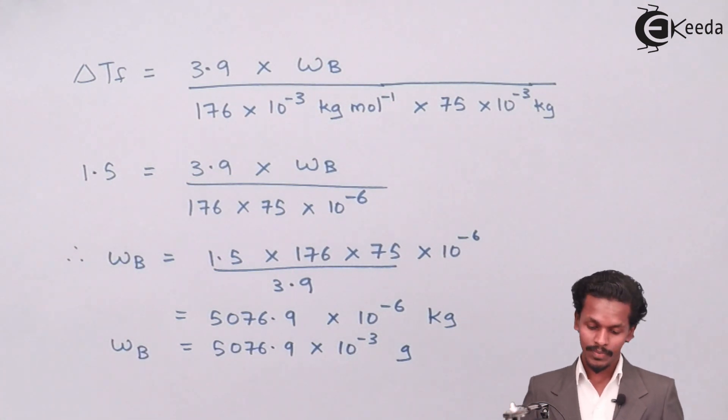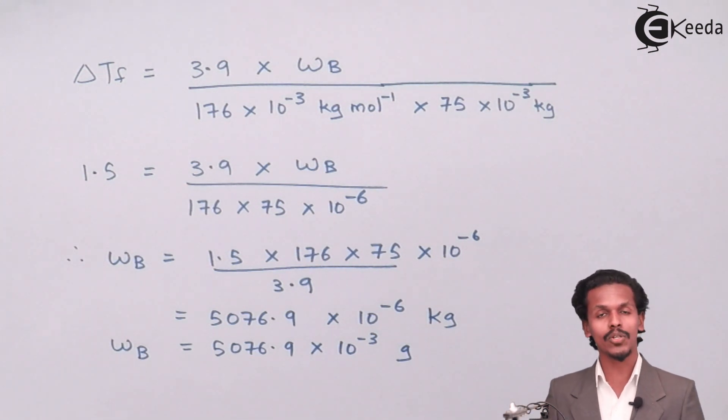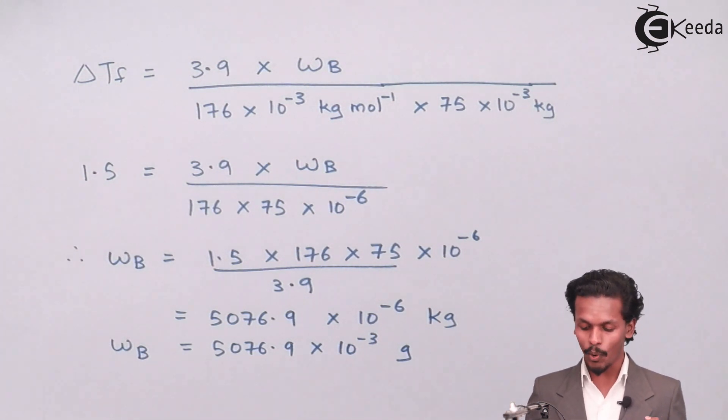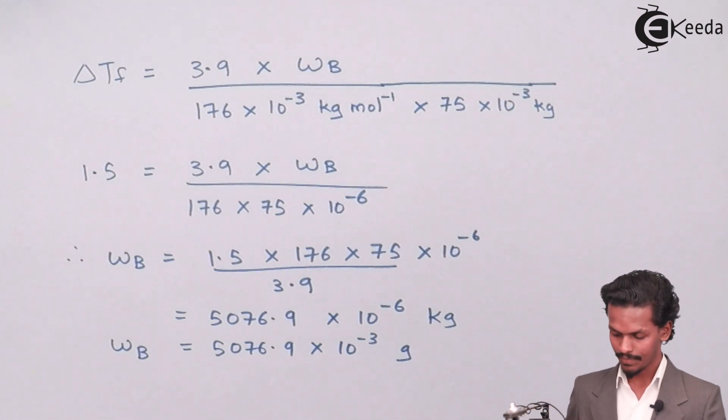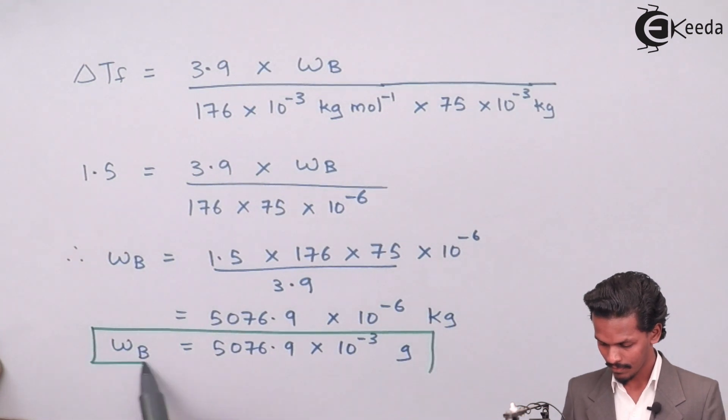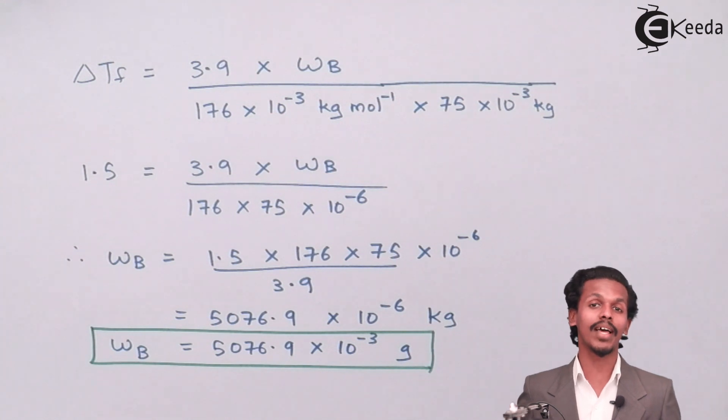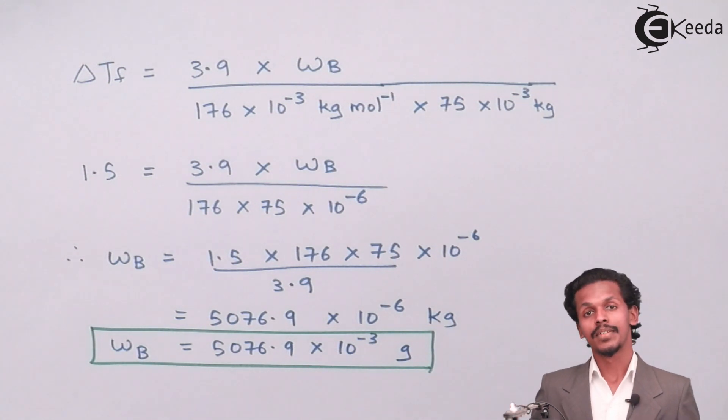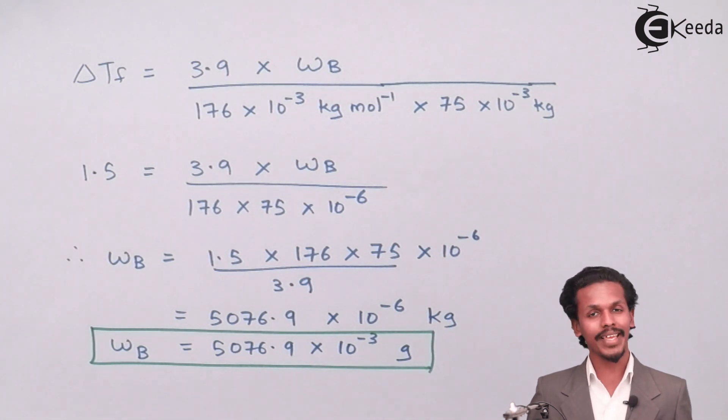Eventually we get the answer as WB equals 5076.9 into 10 raised to minus 3 gram. This is how we have calculated the mass of ascorbic acid.